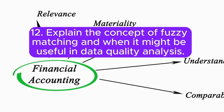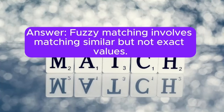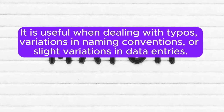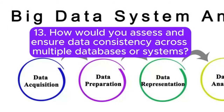12. Explain the concept of fuzzy matching and when it might be useful in data quality analysis. Answer: Fuzzy matching involves matching similar but not exact values. It is useful when dealing with typos, variations in naming conventions, or slight variations in data entries. Fuzzy matching algorithms assign similarity scores to aid in matching.